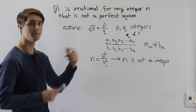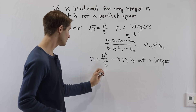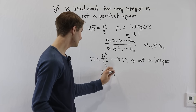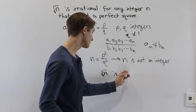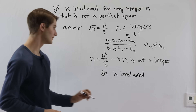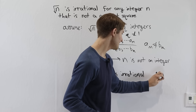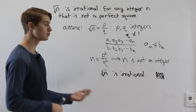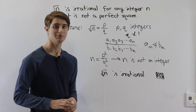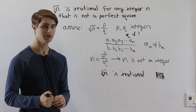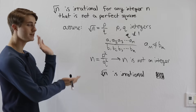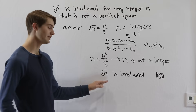Therefore, this assumption must have been false. And therefore, the square root of n is not equal to p over q for some integers. Therefore, the square root of n is not rational — or in other words, it is irrational by contradiction. And in fact, that is the end of our proof. This is a nice short way to prove that as long as your square root is not of a perfect square, it's going to be irrational. So this applies to any integer. If we look at the square root of 6, or the square root of 80, anything that's not a perfect square, we can use this process to show by contradiction that this square root must be irrational.